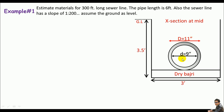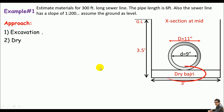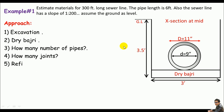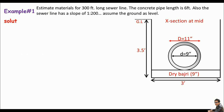Let's look at the example. We are asked to estimate materials. My approach will be: first, excavation — how much excavation is needed for the trench; then calculation for the dry bajari; then determining the number of pipes required and how many joints; and lastly, calculation for refilling of the trench.